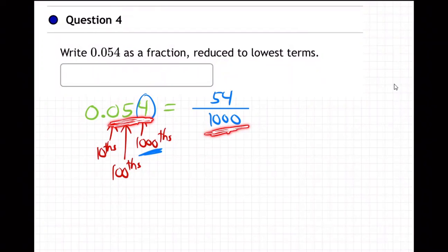So it ends in the third place. Tenths, hundredths, thousandths. So we put a thousand on the bottom. Okay. Now let's reduce this.